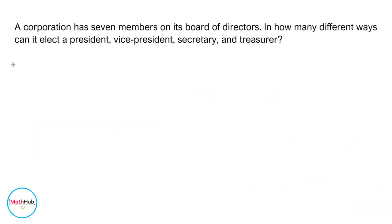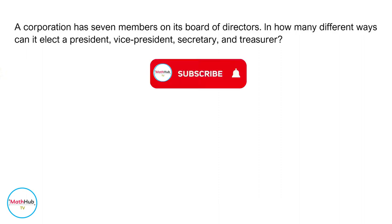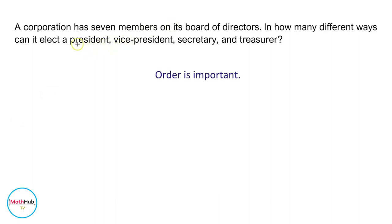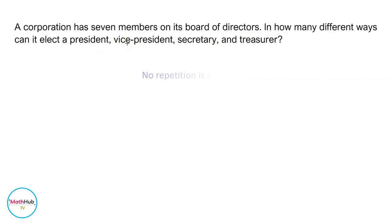A corporation has seven members on its board of directors. In how many different ways can it elect a president, a vice president, a secretary, and a treasurer? Notice that there is a distinction between the offices — a president is different from a vice president, and also different from a secretary and treasurer. No person can serve in two offices at the same time, so therefore this is an example of a permutation problem.